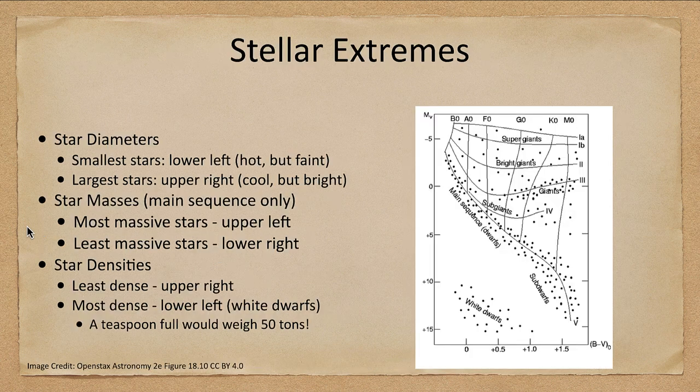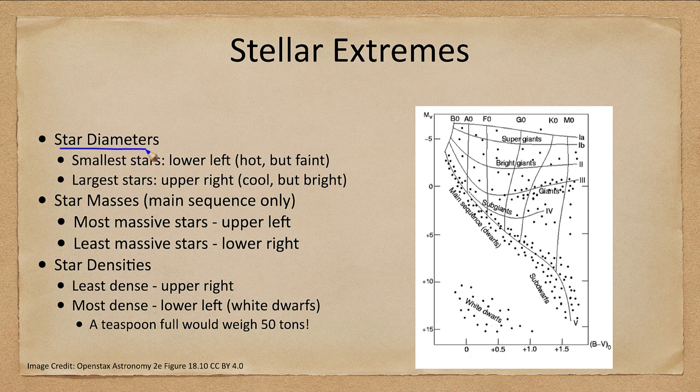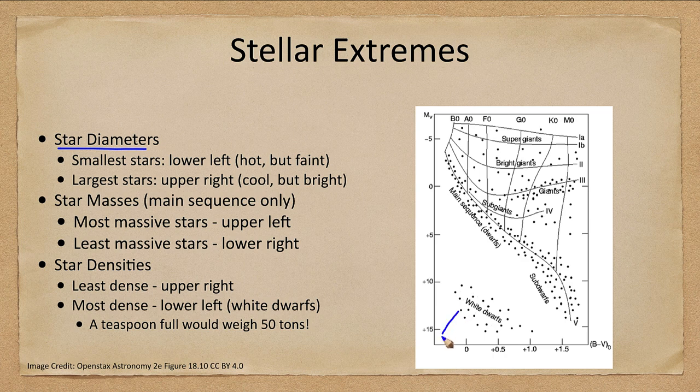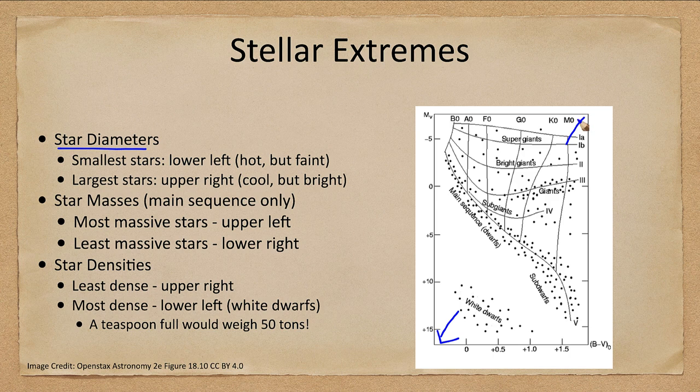When we look at some extremes, we have the star diameters. The smallest stars are down in the lower left hand side, the largest diameter stars in the upper right.